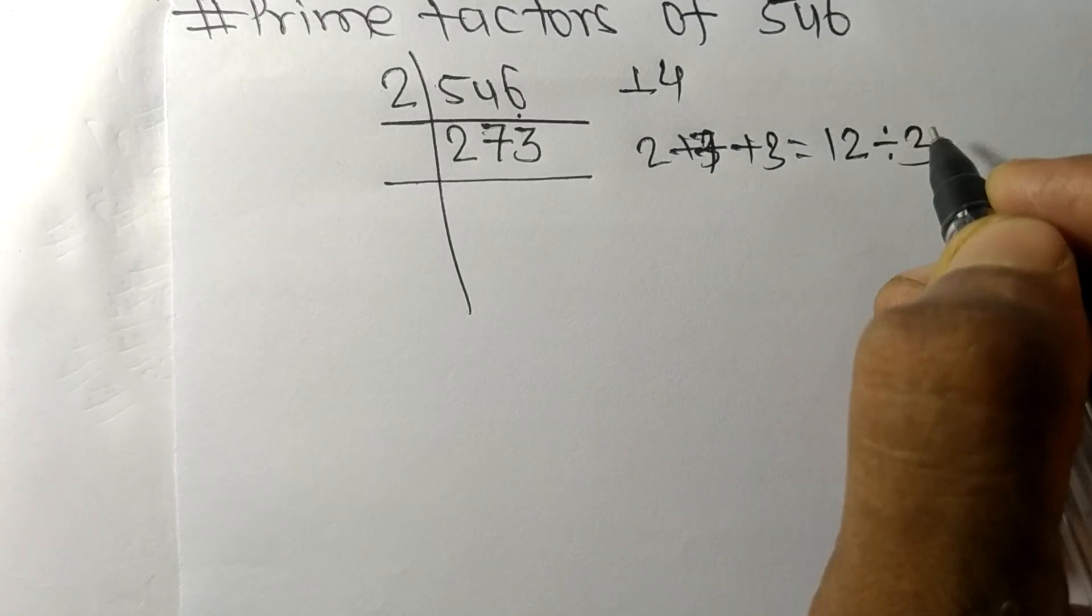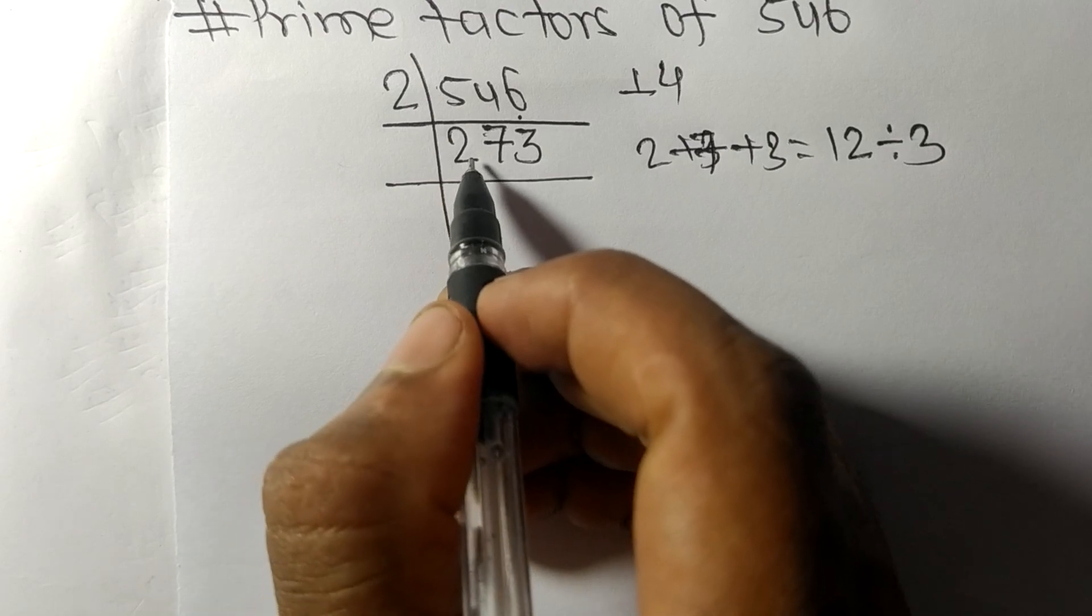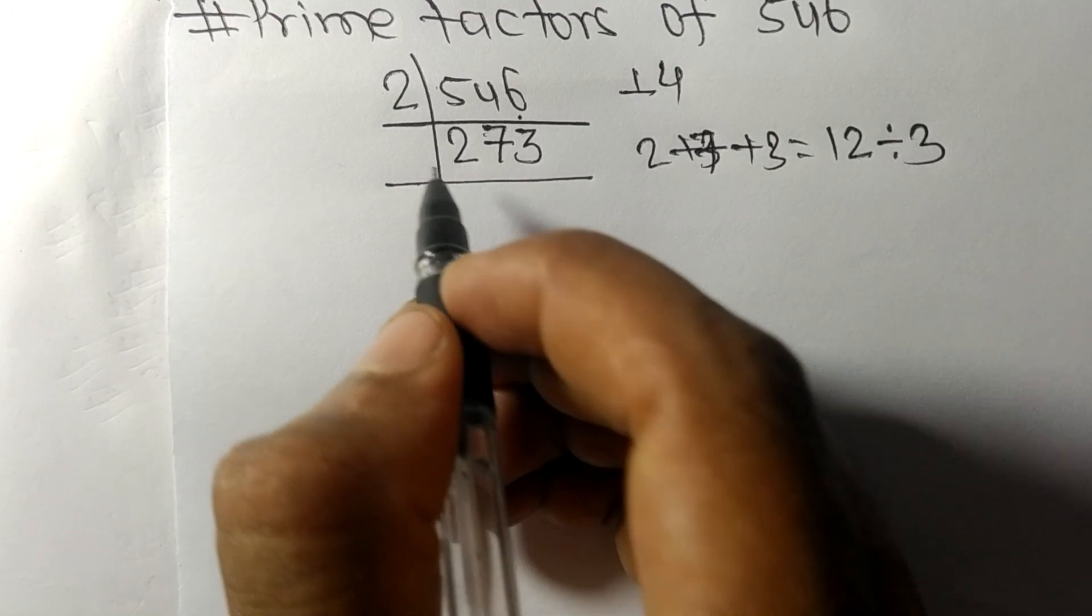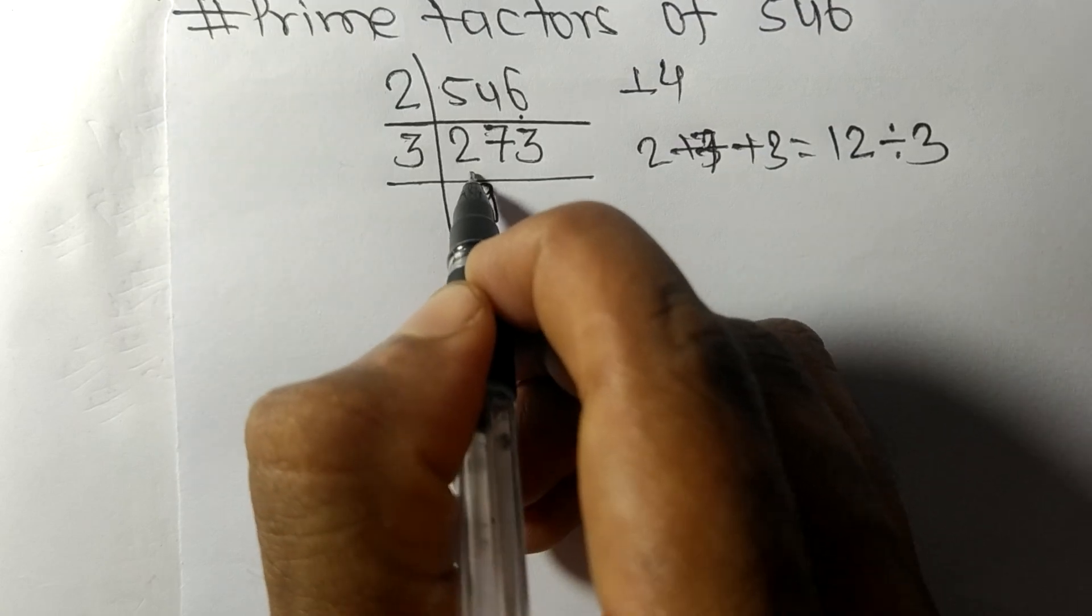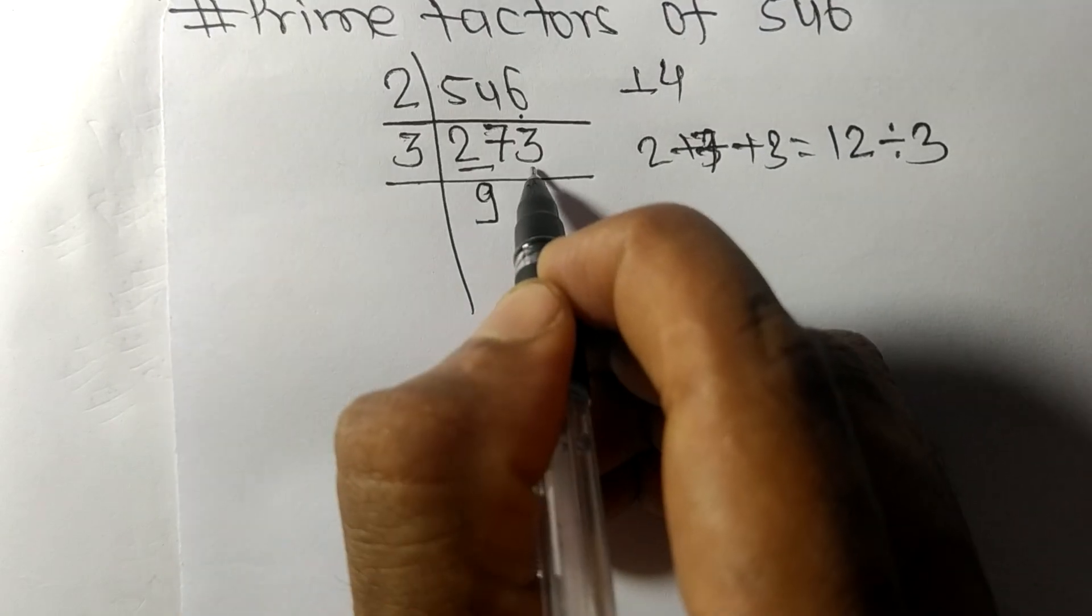So 273 is also divisible by 3. 3 times 9 equals 27, 3 times 1 equals 3. Now we have 91, which is exactly divisible by 7.